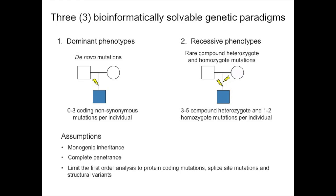We're really focusing on three genetically tractable paradigms. The best case is a de novo dominant mutation, meaning the mutation arose in the offspring for the first time. If you sequence the trio, and ask what is new in the sequence of the affected proband, there are usually only zero to three variants — with our filter set, you can pretty much get the answer right from that.